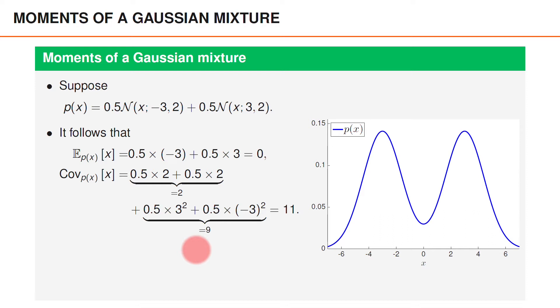The second part is the spread of the means which is 0.5 times 3 squared plus 0.5 times minus 3 squared. Here, 3 is the distance between the mean of the Gaussian mixture, which is 0, and the mean of the individual components. This part sums to 9.